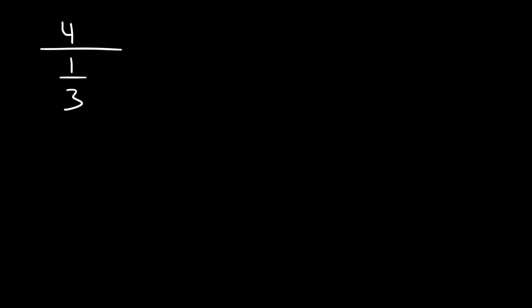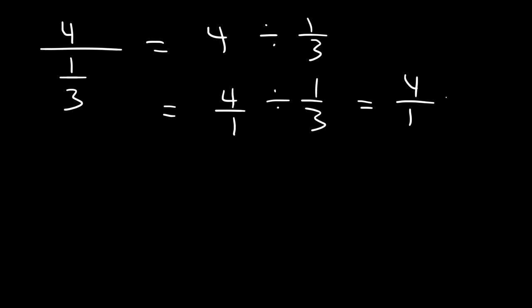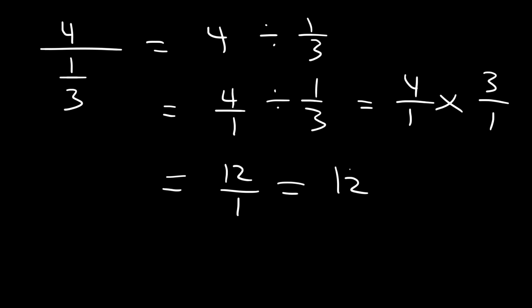What if you see a problem written as a fraction over a fraction? If you see this, you need to rewrite it. This is equivalent to 4 divided by 1 third. Write it as 4 over 1 divided by 1 third, which using keep-change-flip becomes 4 over 1 times 3 over 1. 4 times 3 is 12, and 1 times 1 is 1, so the answer is just 12.